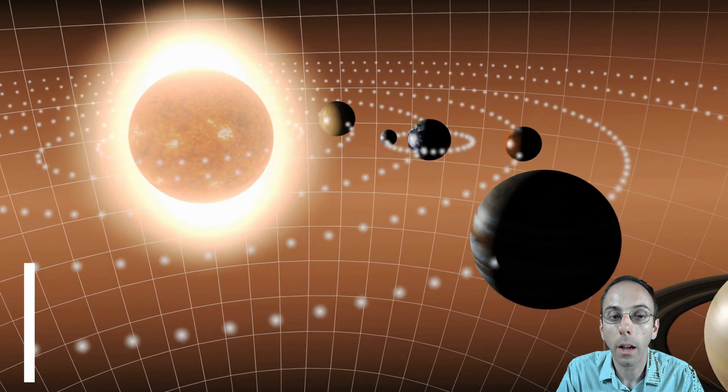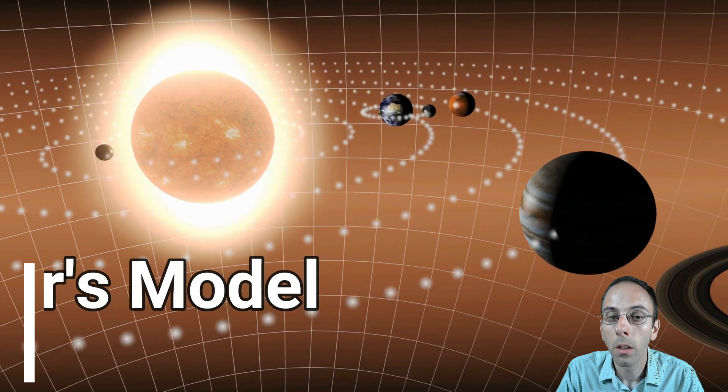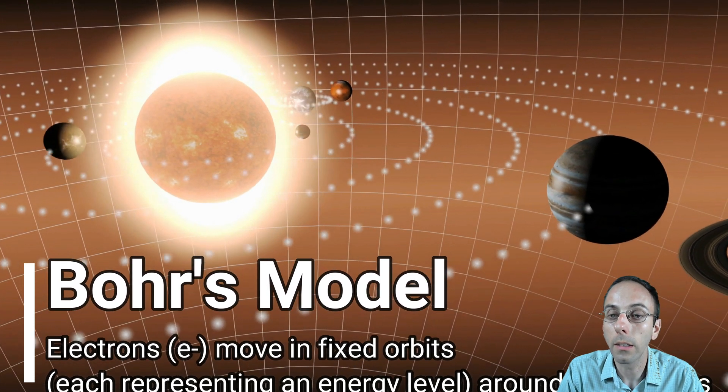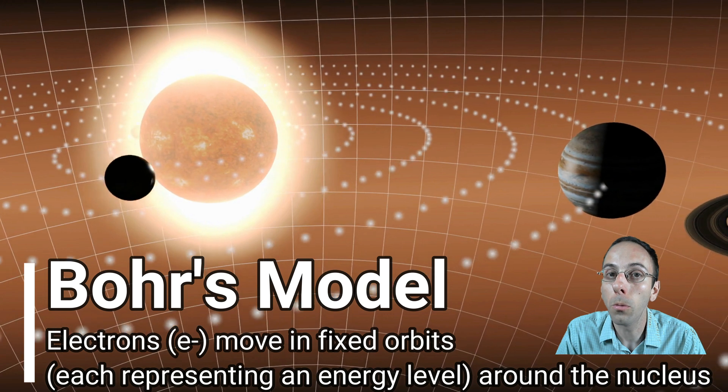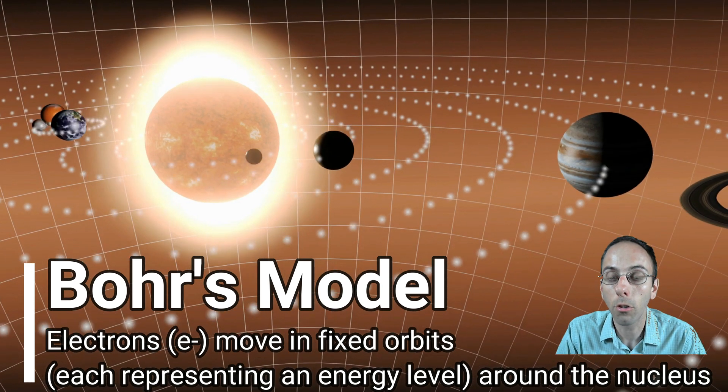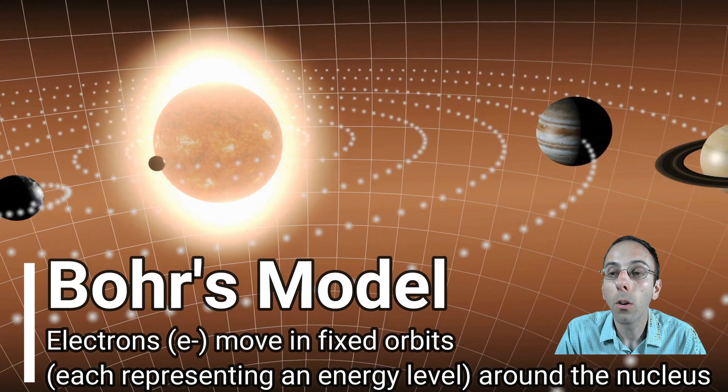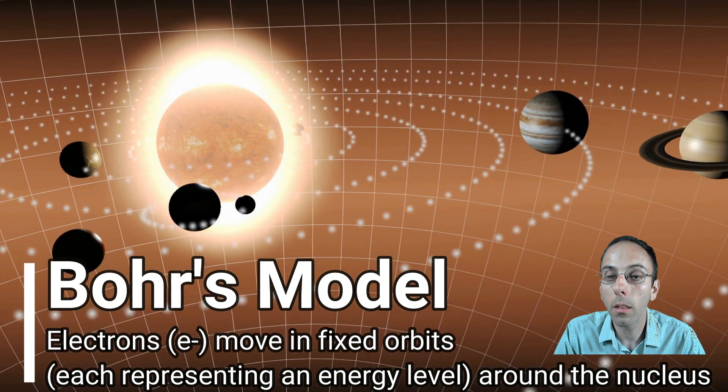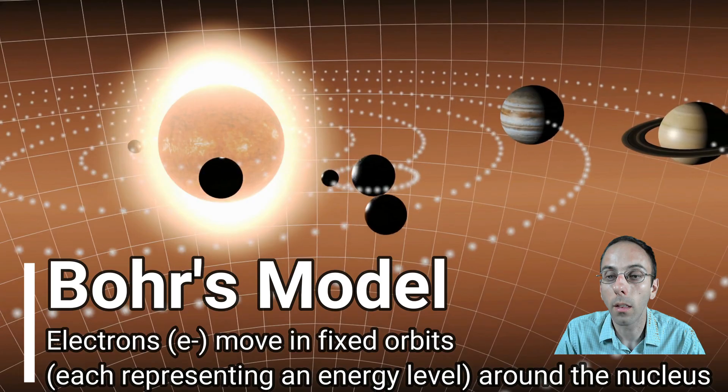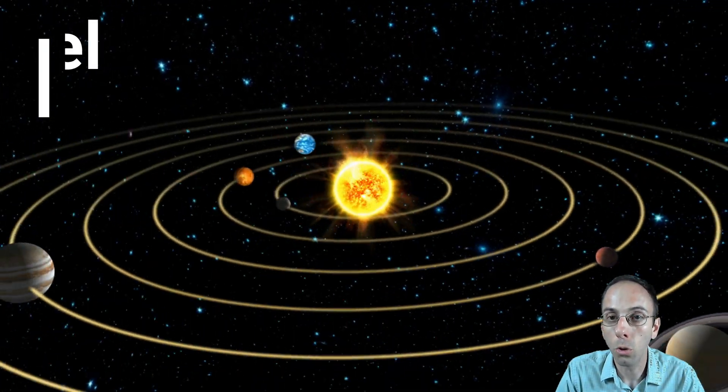However, when we're looking at the Bohr's model, we want to keep in mind that the electrons are thought to move in fixed orbits, each representing an energy level around the nucleus. So it's a simplified way to think about this. So where each planetary kind of orbit is, an electron would exist in that level, and the sun would represent the nucleus.